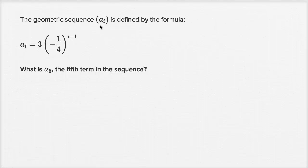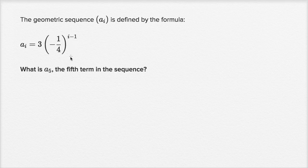The geometric sequence a sub i is defined by the formula where the i-th term is equal to three times negative one-fourth to the i minus one power. Given that, what is a sub five — the fifth term in the sequence? Pause the video and try to figure out what a subscript five is.